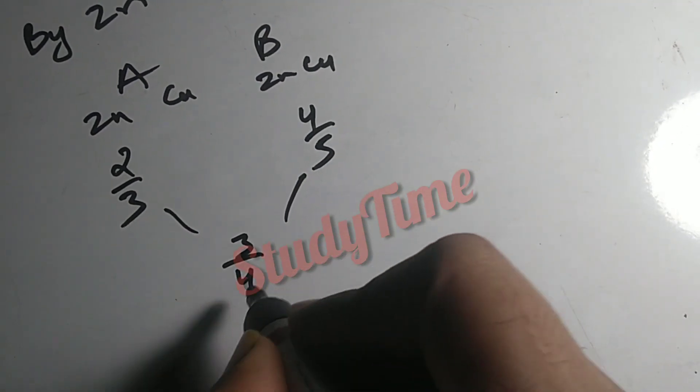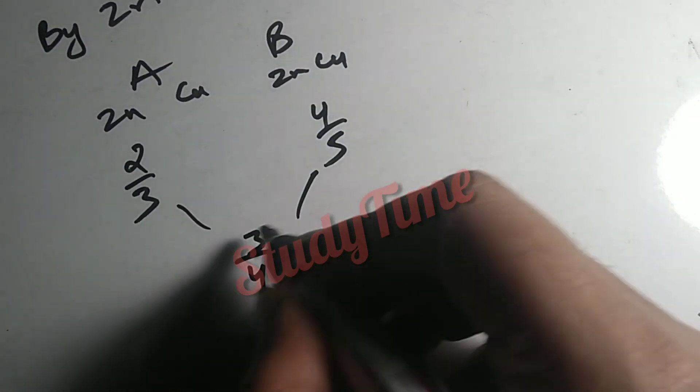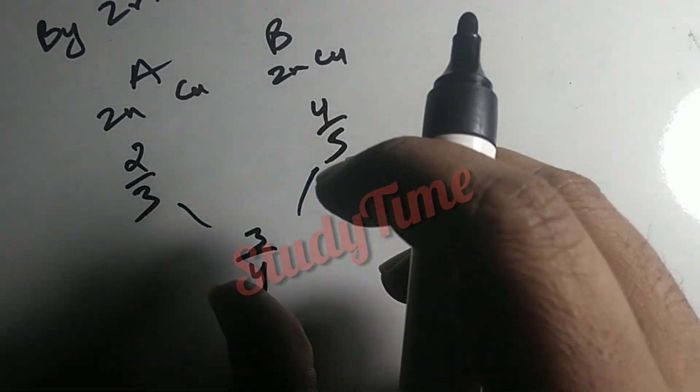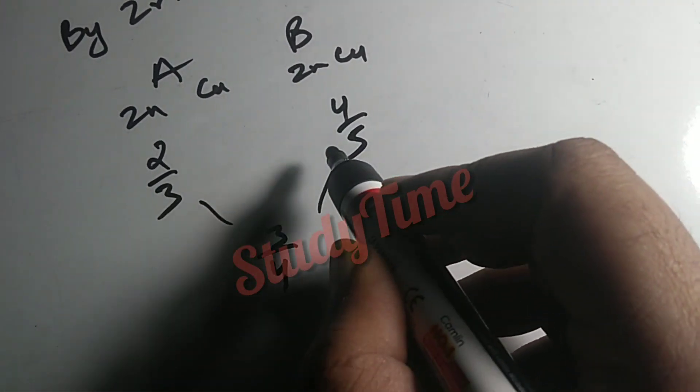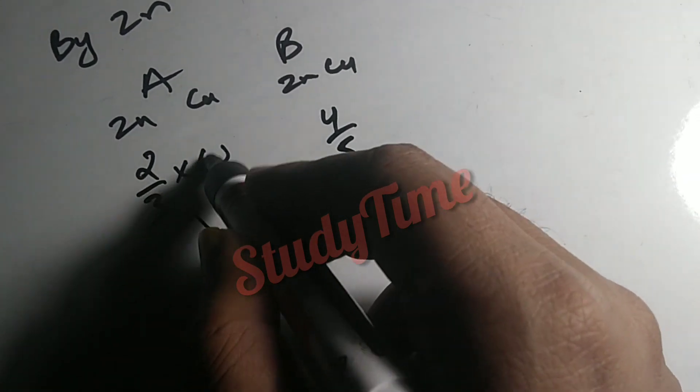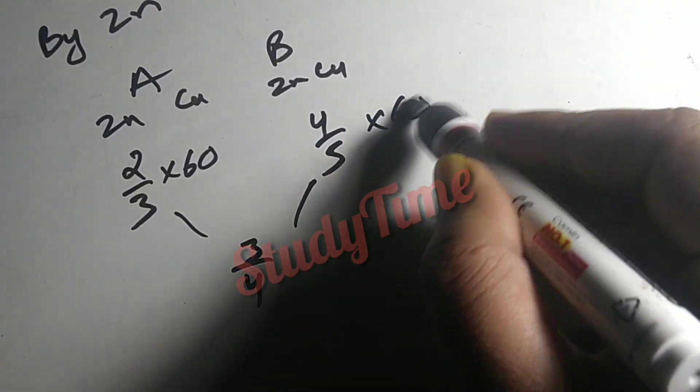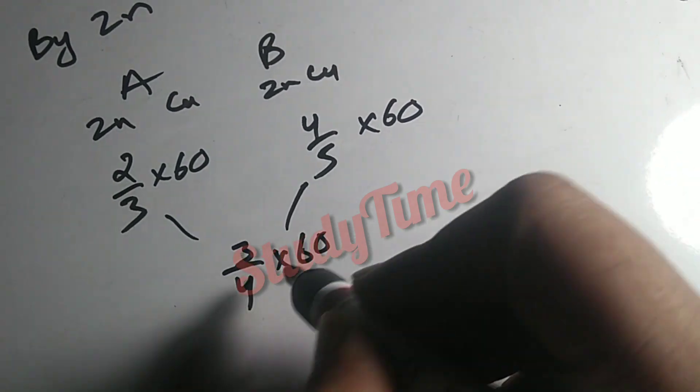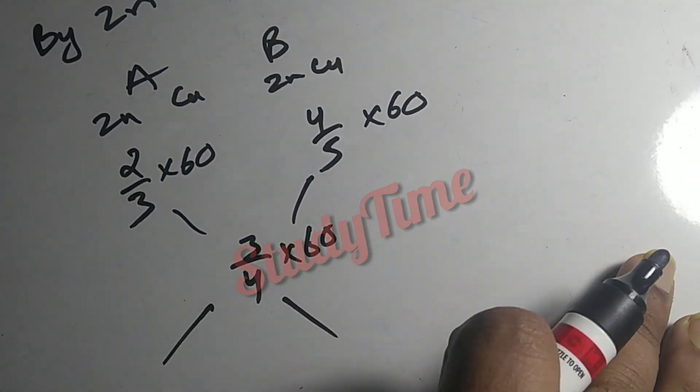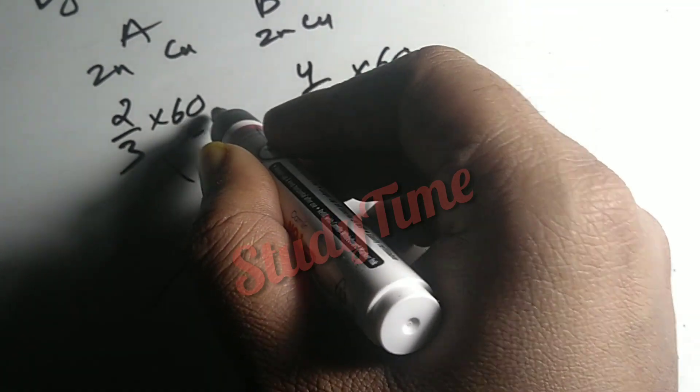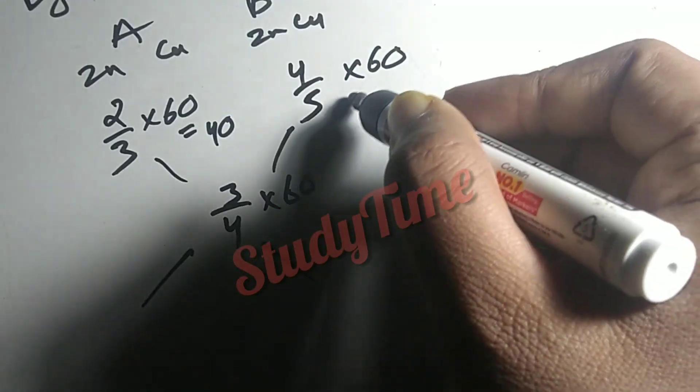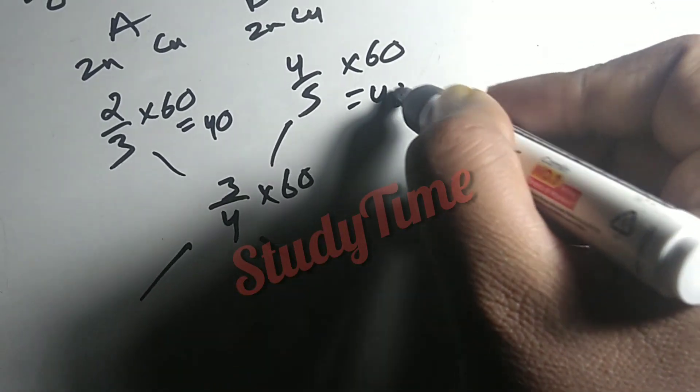So 2/3 times 60 equals 40. And 3/4 times 60 equals 48. We are going to get 40 and 48.